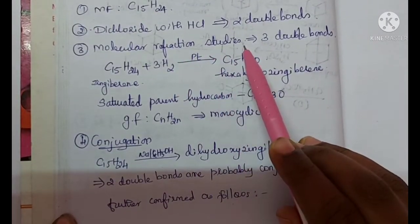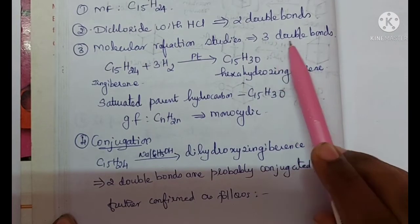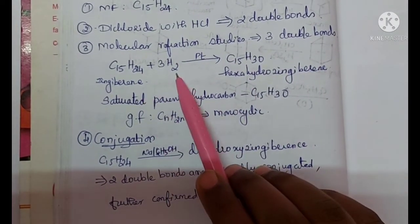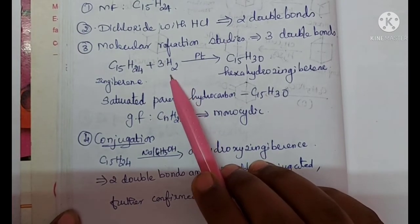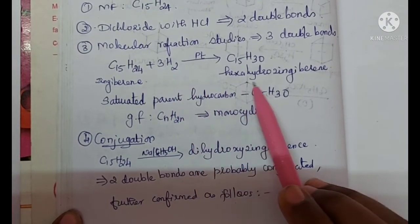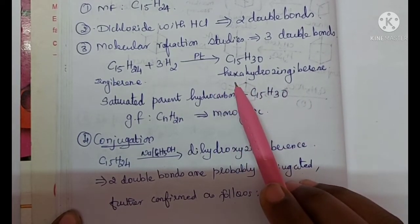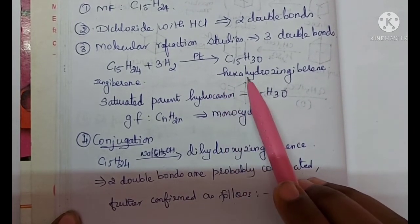Zingiberine has two double bonds, but at the same time, molecular refraction studies reveal that Zingiberine has three double bonds. When Zingiberine is treated with hydrogen, it absorbs three molecules of hydrogen to form hexahydro Zingiberine. That is, it absorbs six hydrogen atoms or three hydrogen molecules.